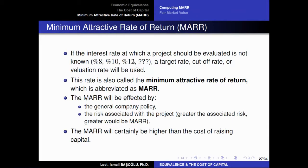That pertinent interest rate under which you are going to evaluate a project — that target rate, cutoff rate, or valuation rate — is called the minimum attractive rate of return, which is subjective to the company that evaluates it. This is abbreviated as MARR. In future videos, if I refer to MARR, I am mentioning the minimum attractive rate of return. MARR is a terminology used by each company to evaluate alternative project investments or alternative options of cash flows.